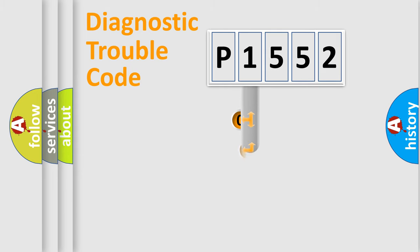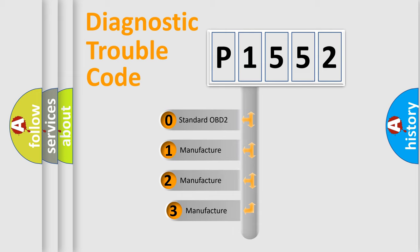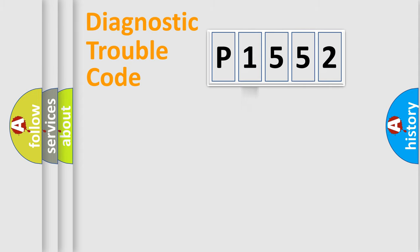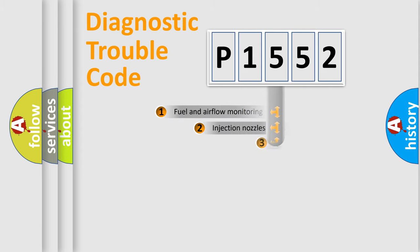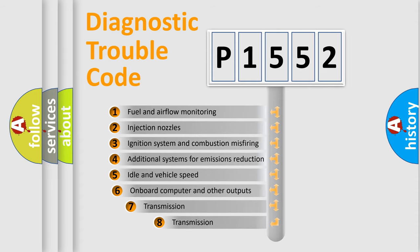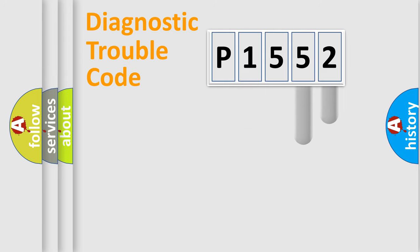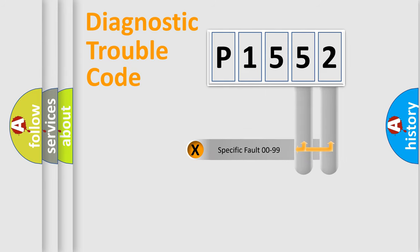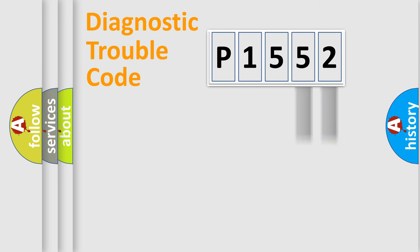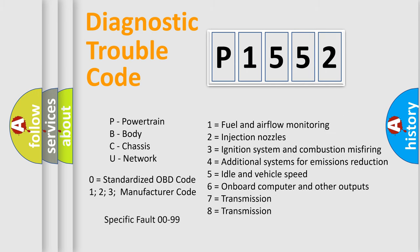This distribution is defined in the first character of the code. If the second character is expressed as zero, it is a standardized error. In the case of numbers 1, 2, or 3, it is a manufacturer-specific error. The third character specifies a subset of errors. This distribution is valid only for the standardized DTC code. Only the last two characters define the specific fault of the group. Note that such a division is valid only if the second character code is expressed by the number zero.